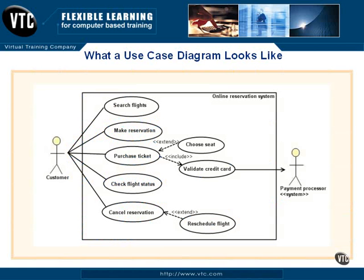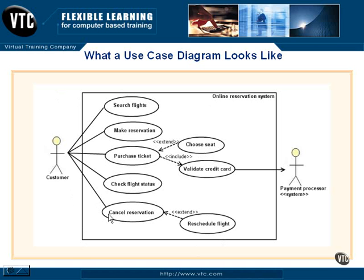Here's an example of a use case diagram for an online reservation system for making travel arrangements. We have a rectangle representing the system, labeled 'Online Reservation System.' Actors are represented by stick figures, labeled with their role — we have the customer and a payment processor, indicated as a system. Use cases are represented by ellipses, with the title inside each ellipse, all within the system rectangle. We also show relationships between actors and use cases, and between use cases themselves — we'll cover more of this in subsequent movies as we draw our own use case diagrams.